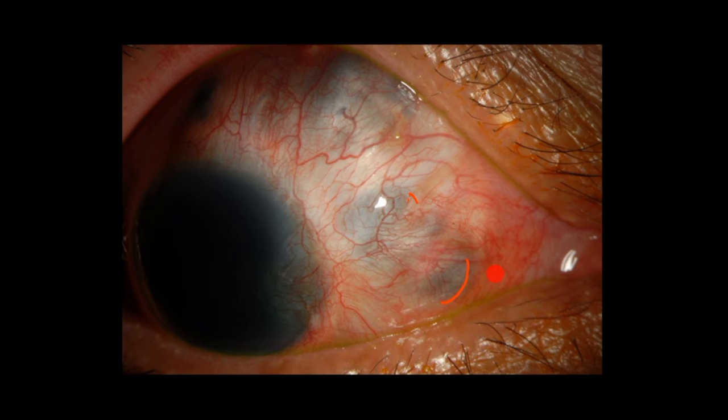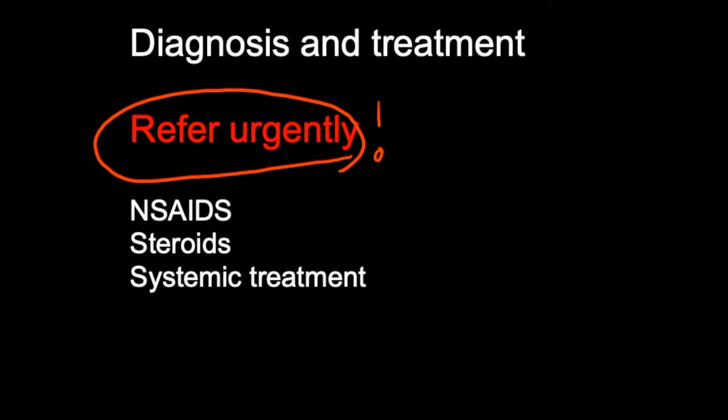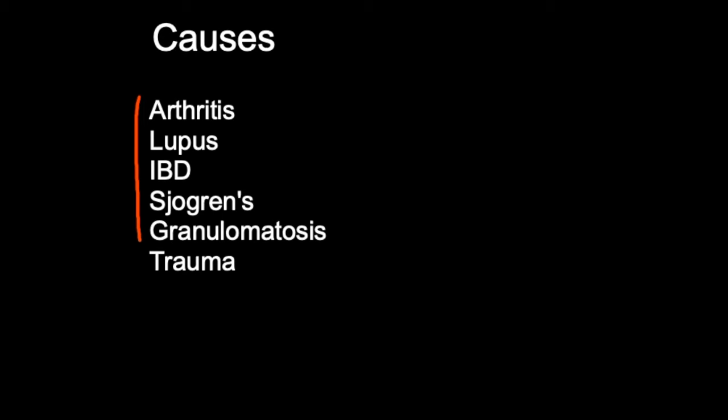If you think your patient has scleritis and you're in a primary care or family medicine setting, make sure you refer these patients urgently — they need to see an ophthalmologist as soon as possible. This is important because without treatment, scleritis can lead to visual loss. During the exam, the ophthalmologist is likely to look inside and outside of the eye using a special microscope called a slit lamp, and will ask the patient about their overall health, since scleritis is associated with many systemic conditions.